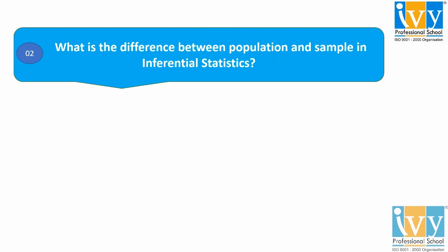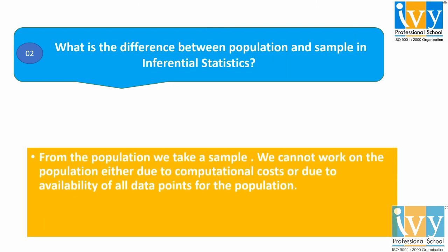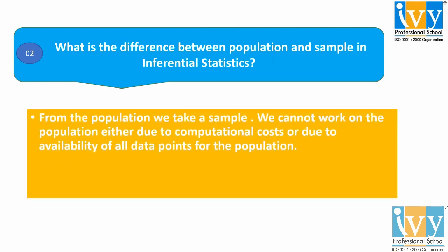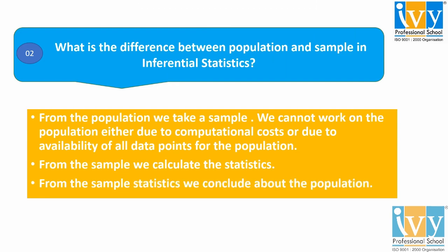Moving to the second question: What is the difference between population and sample in inferential statistics? From the population, we take a sample. We cannot work on the population either due to the computational cost or due to the availability of all the data points for the population. In other words, a population is the entire group that we want to draw conclusions about, whereas a sample is the specific group that we will collect data from. From the sample, we calculate the statistics, and from the sample statistics we can conclude about the population. An important point is that the size of the sample is always less than the total size of the population.